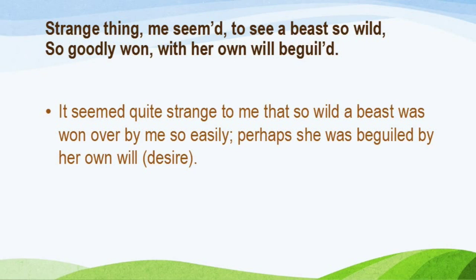The final couplet goes: 'Strange thing me seemed to see a beast so wild, so goodly won with her own will beguiled.' Here Edmund Spenser says he was quite mesmerized and surprised at how a wild beast can be tamed so easily. The deer, which lives in the wild and represents Elizabeth Boyle, is so goodly won. He also hints that perhaps she was beguiled by her own will — meaning the ultimate submission of the deer may have been driven by her own desire.